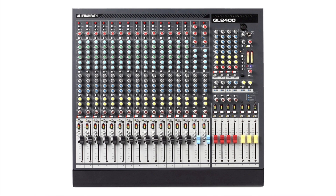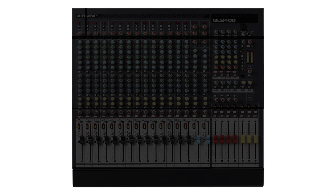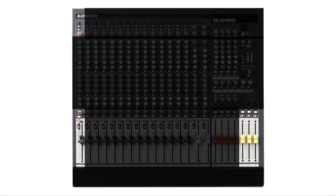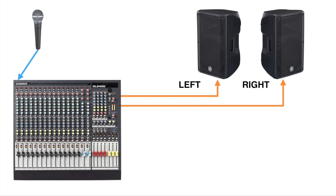If we look at the mixer from the top, the main sections that we'll be adjusting would be the gain or the trim, making sure that our signal is strong enough. As it comes in, we can then use the fader to adjust the level that is sent to the main faders. The main faders set the general output that finally goes to the speakers. This is a very basic mixer setup, but let's do something a little bit more advanced.